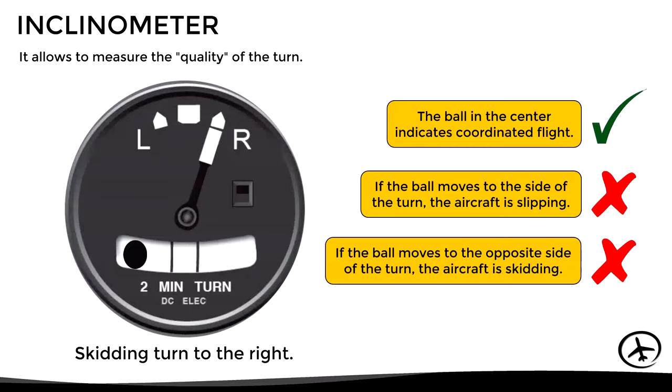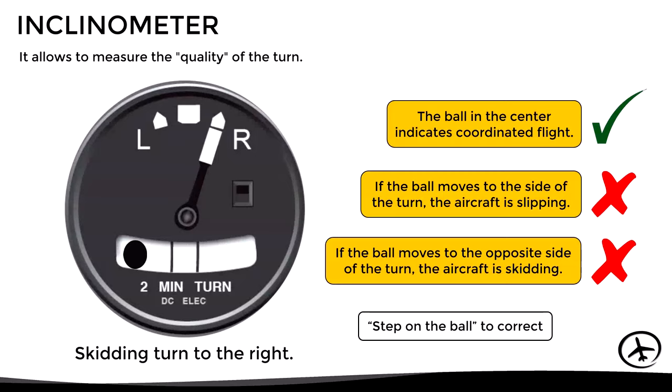Usually, in most procedures and maneuvers, the objective is to maintain coordinated flight, so the pilot must keep the ball centered. A rule of thumb is to 'step on the ball,' meaning the pilot must press the pedal on the side of the ball to correct a skidding or slipping turn and center it.